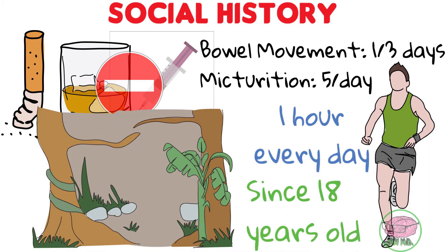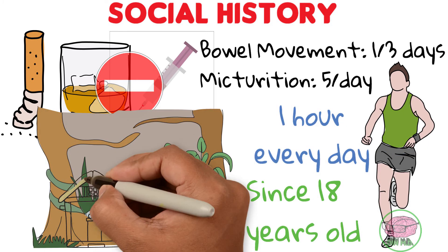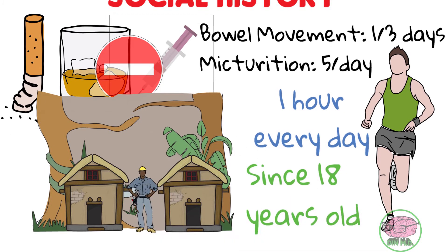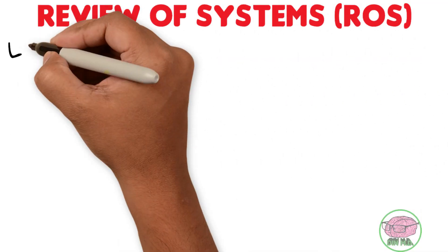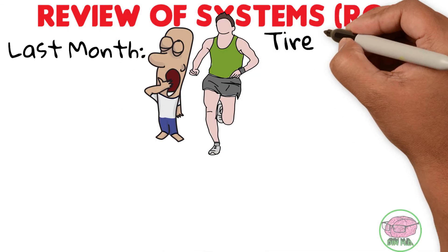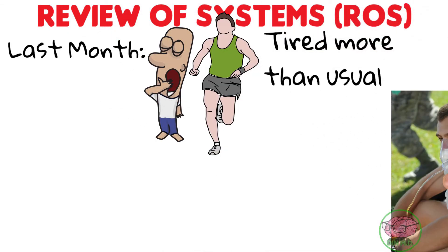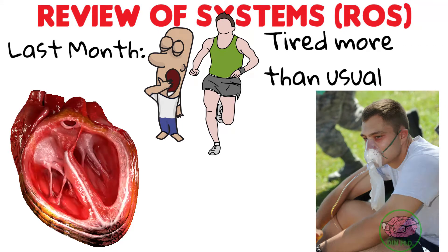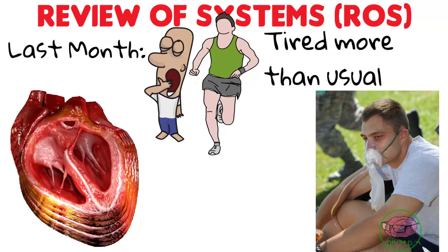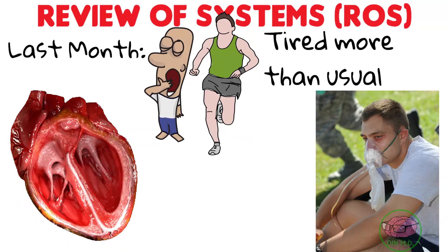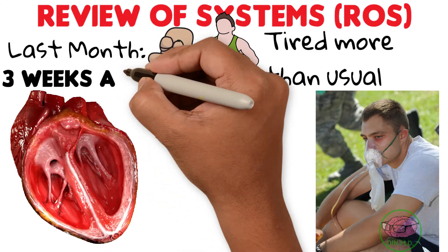Since he was 18 years old, he goes to the Ecuadorian jungle and builds houses for low-income people. John says he has been feeling tired lately, especially when he goes jogging — he gets tired more than usual, and sometimes feels shortness of breath. He has also been feeling like his heart is coming out of his chest and beating rapidly, happening spontaneously throughout the day.